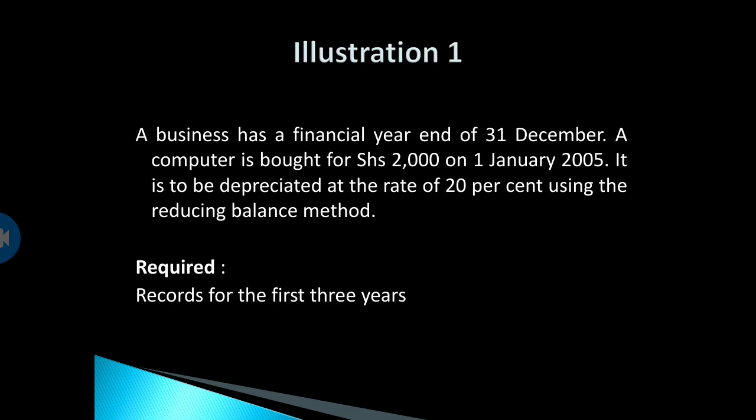I'm going to use this illustration to show how we record depreciation in the accounting records. A business has a financial year end of 31st December, meaning that every 31st December this business closes up and balances off its books. A computer is bought for 2,000 shillings on 1st January 2005, to be depreciated at a rate of 20% using the reducing balance method. Remember, we have different methods of calculating depreciation — the straight line method and the reducing balance method.